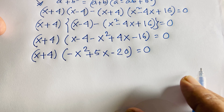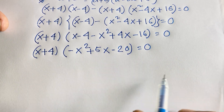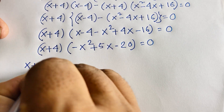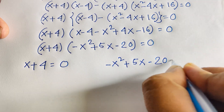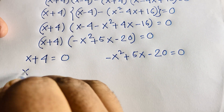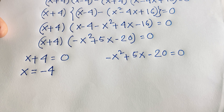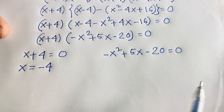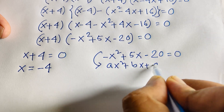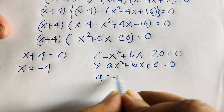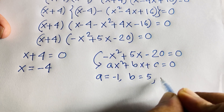We now have two cases: x plus 4 equals 0, and negative x squared plus 5x minus 20 equals 0. From the first case, x equals negative 4. For the quadratic equation, comparing with ax squared plus bx plus c, we get a equals negative 1, b equals 5, and c equals negative 20.